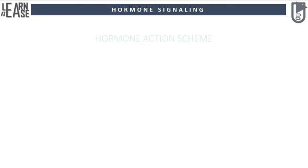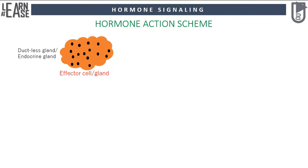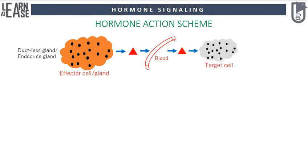Let's see the general scheme of hormone release and action. Hormones are produced by ductless glands of the body; these glands are often termed as endocrine glands. Hormones, once produced by these glands, are transported in the blood across the body. Target cells recognize these hormones through specific receptors, and once target cells recognize these molecules they get activated and deliver the necessary effect.